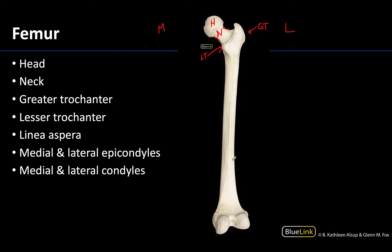Moving down to the body or shaft of the posterior femur, you will see this line running down which is referred to as the linea aspera. This will be the distal attachment site for the adductors — that medial compartment — many of those muscles in the medial compartment of the thigh. Depending on how robust those are, the line could be larger or smaller depending on the individual.